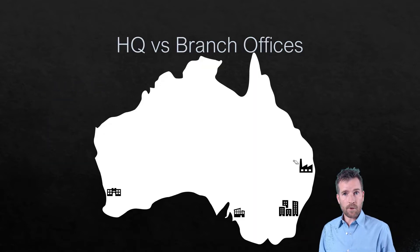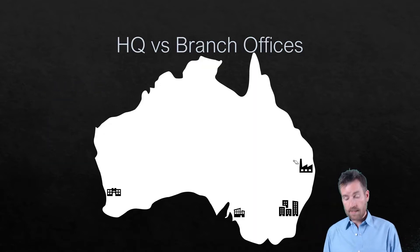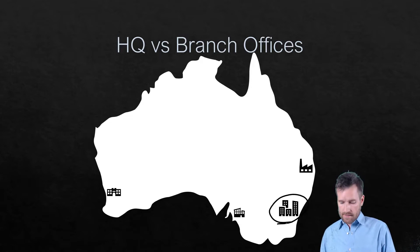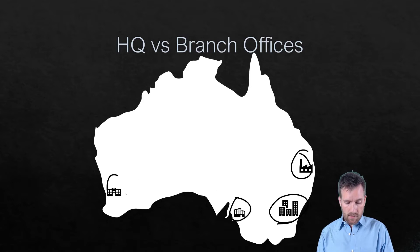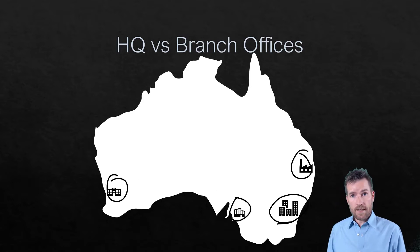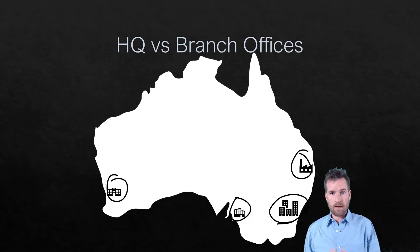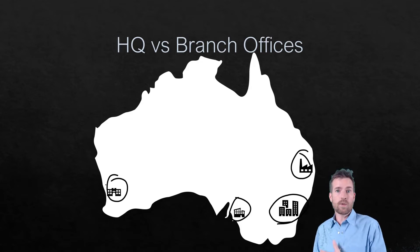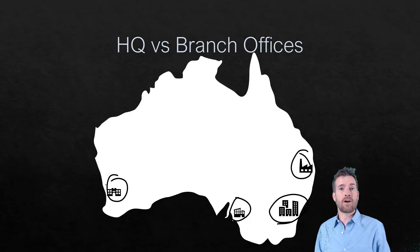The diagram we're going to work with is a company in Australia that has a headquarters in Sydney, and then several branch offices across the country. So how do we network these together? We have several LANs at each one of these locations, but how do we create a WAN where all of these are operating together?